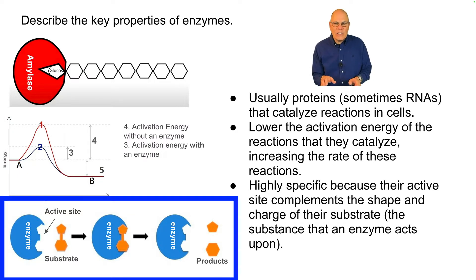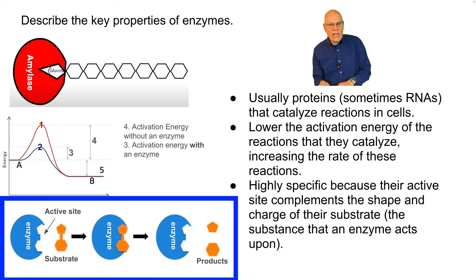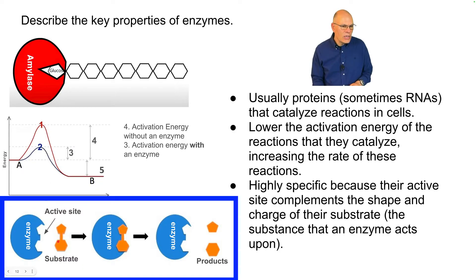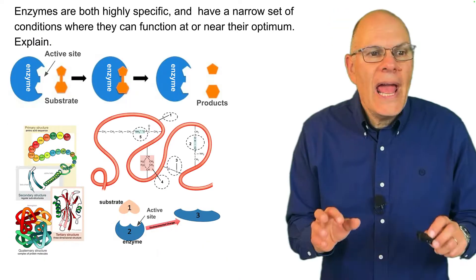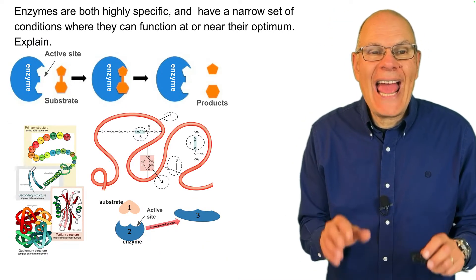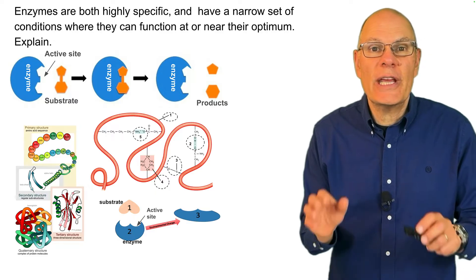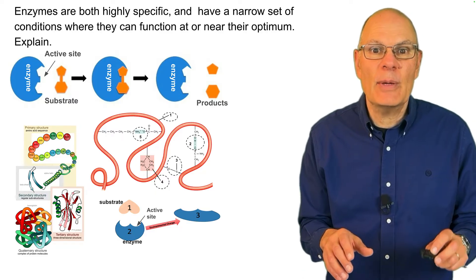Enzymes are highly specific because their active site complements the shape and charge of their substrate — the substance that an enzyme acts upon. Here's an active site, here's the substrate, and this is the enzyme as a whole, which would be a large protein. Here's the enzyme interacting with the substrate, and here we have the products. Enzymes are both highly specific and have a narrow set of conditions where they can function at or near their optimum.